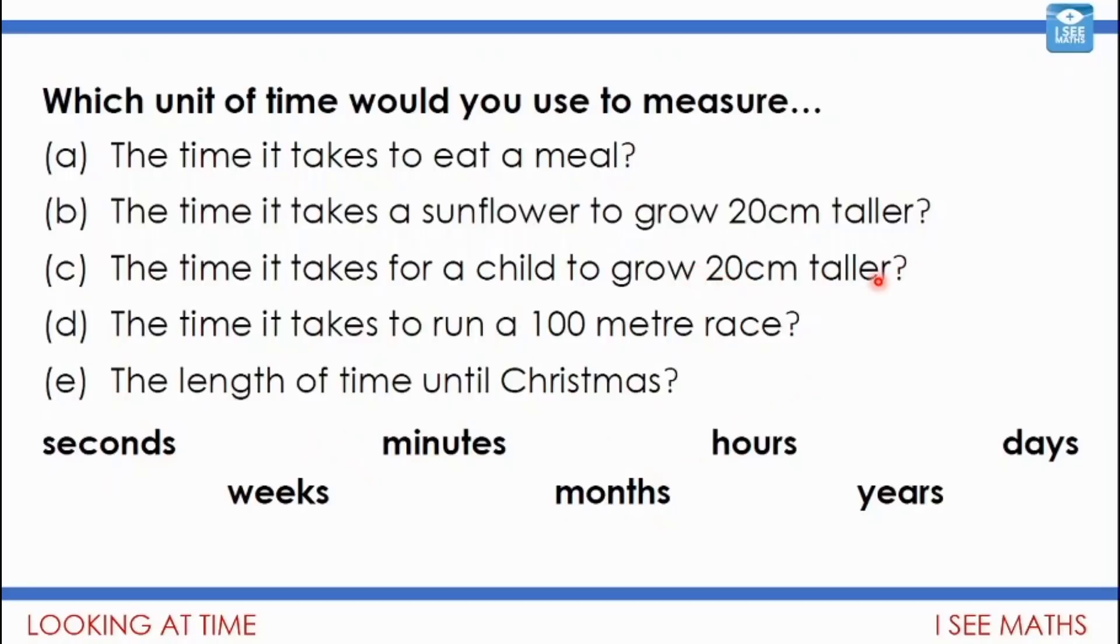The time it takes for a child to grow 20 centimeters taller—we're not quite as fast at growing as sunflowers. That one we'd have to measure over the course of years. To run a hundred meter race, that one I think we'd measure in seconds. The length of time until Christmas—it's a while off yet, so I'm still measuring in months.